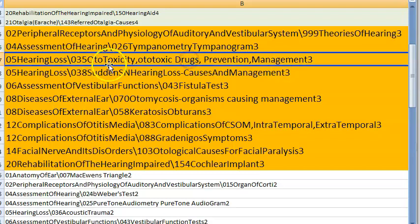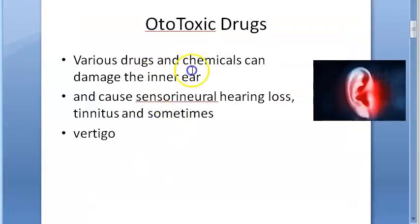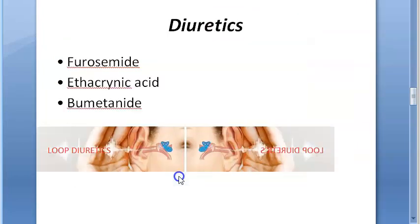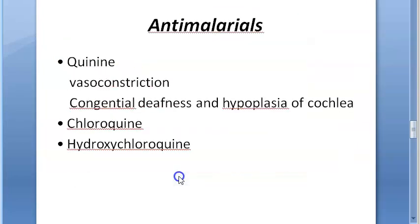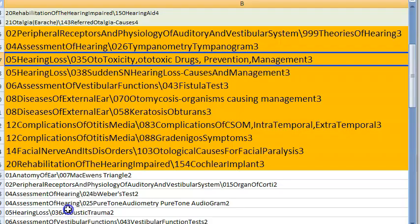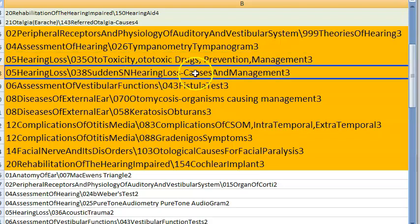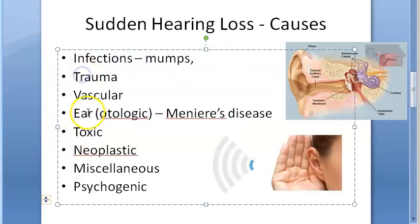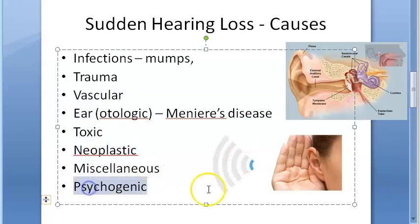Ototoxic drugs are important in the hearing loss chapter. Various drugs can be harmful: aminoglycoside antibiotics, diuretics, analgesics, anti-malarials, and cytotoxic drugs are all ototoxic. Sudden hearing loss — causes include infection (mumps), trauma, vascular, Meniere's disease, toxins, neoplasms, and psychogenic causes.